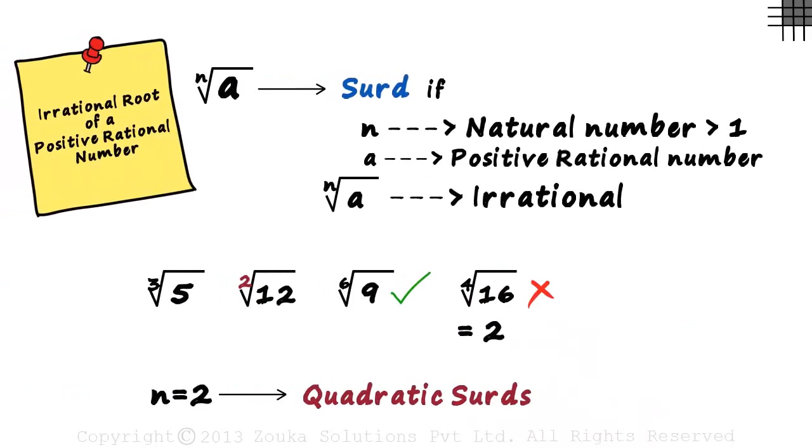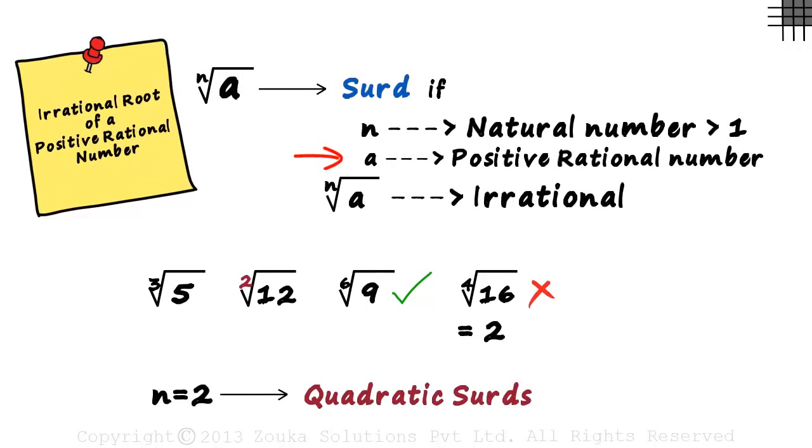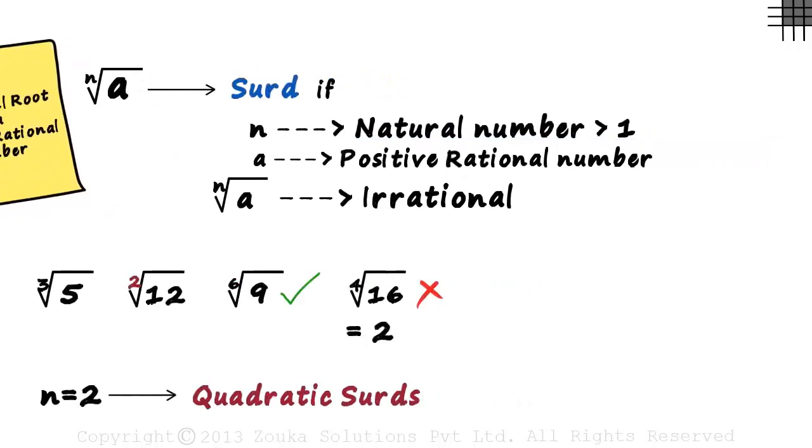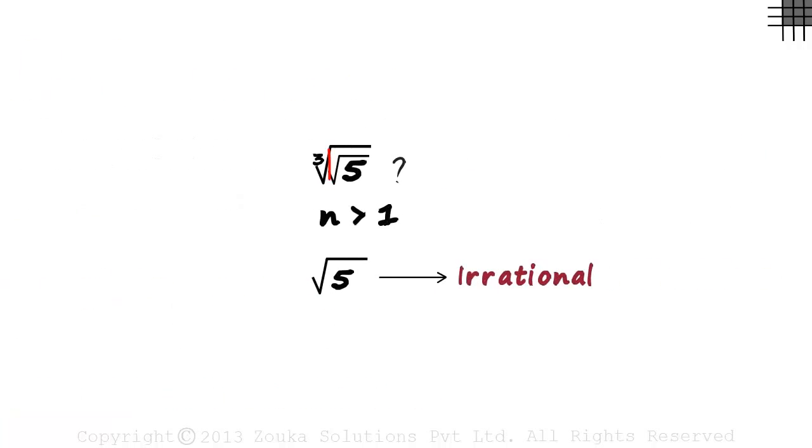Let's go back and see the conditions. The second condition says that the base has to be a positive rational number. But in the example, we can see the base is irrational. So does this mean that this is not a SIRD? Let's see.